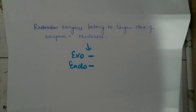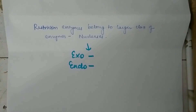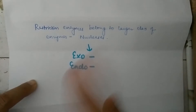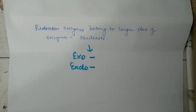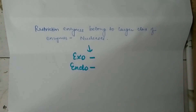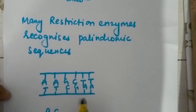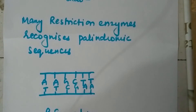Some restriction enzymes recognize a specific sequence of nucleotides and produce a double-stranded cut in the DNA. These recognition sequences are classified by number of bases — usually 4 to 8 bases — and many of them are palindromic, meaning the base sequence reads the same backwards and forwards. For example, going one way we get TTCGAA, and going the other way we also get TTCGAA.